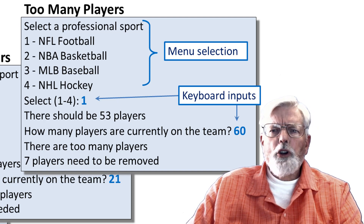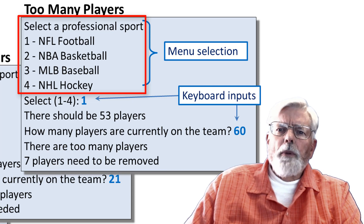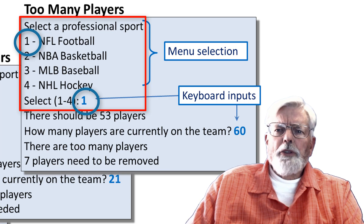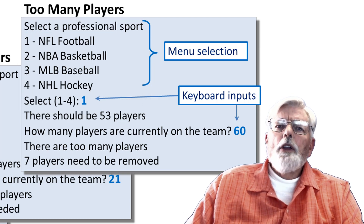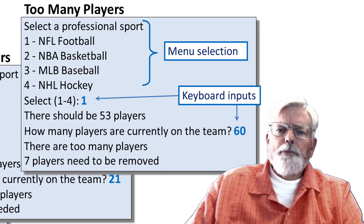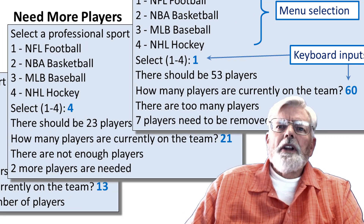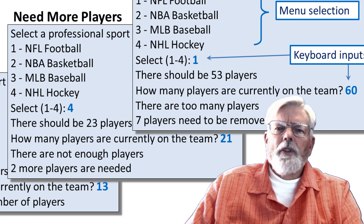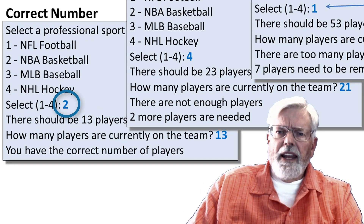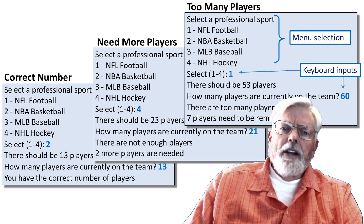The program displays a menu for the user to select one of the sports: football, basketball, baseball, or hockey. In the first example, football is selected. The user's inputs are shown in blue in the video, but there won't be any colors when the actual program runs. The program says there should be 53 players, then asks how many are currently on the team. If the user enters 60, the program responds that there are too many players and 7 need to be removed. In the second example, hockey is selected, 23 players are needed, but the user enters 21, so the program says 2 more are needed. In the third example, basketball is selected and the correct number of players is entered. There are three possible results: too many, not enough, and just right.